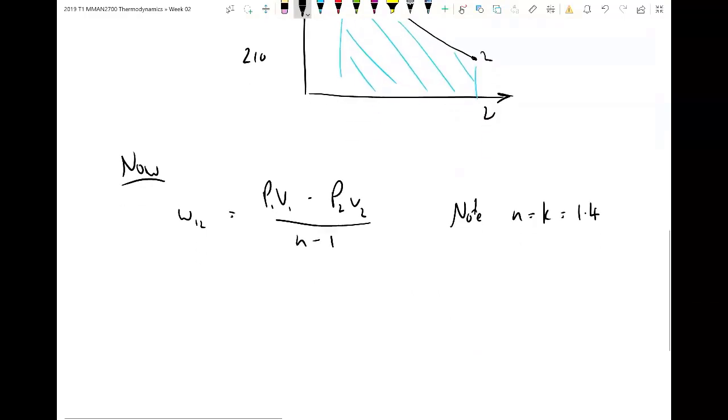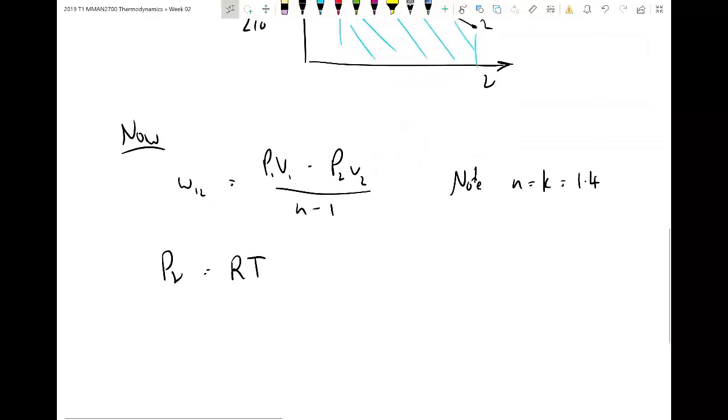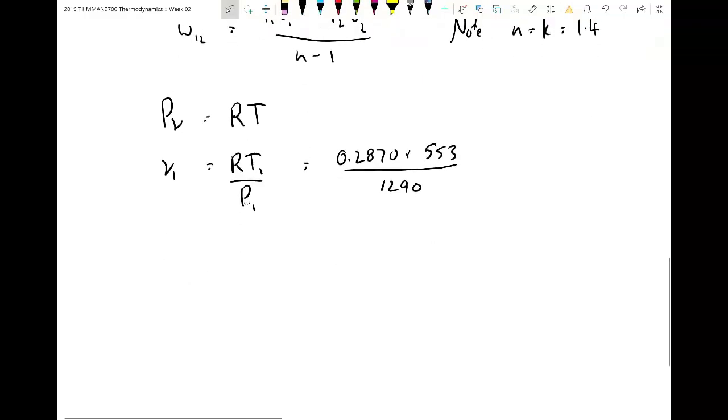So the next governing formula that's going to help us is PV equals RT. So V1 equals RT1 on P1 equals 0.287. T1 we said was 553 divided by P1. We said it was 1290. Cool.